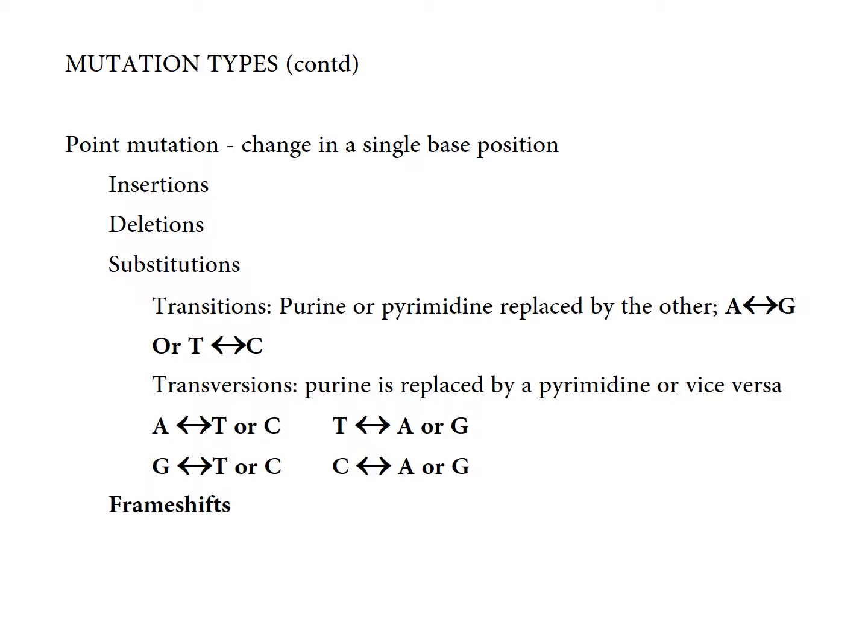Point mutations involve a change in a single base position. For example, if you have the sequence ATTG and there is a change in one base position — say the second thymine — that is a point mutation. Such a mutation can be an insertion, a deletion, a substitution, or it can cause a frame shift.